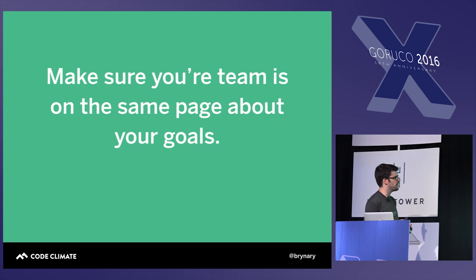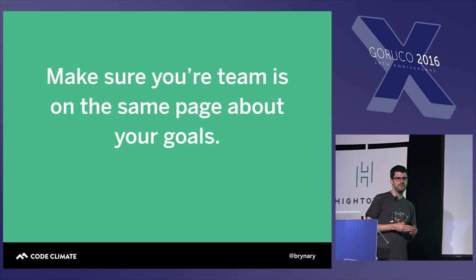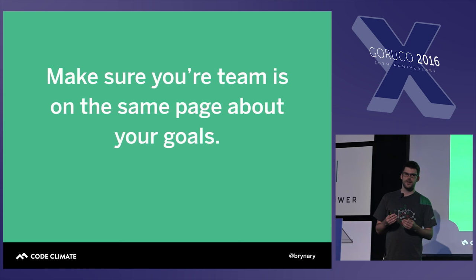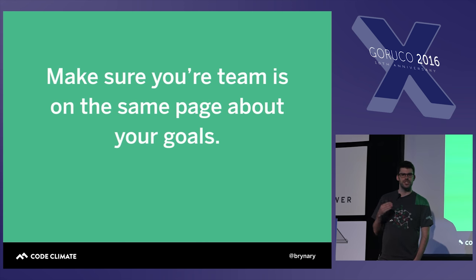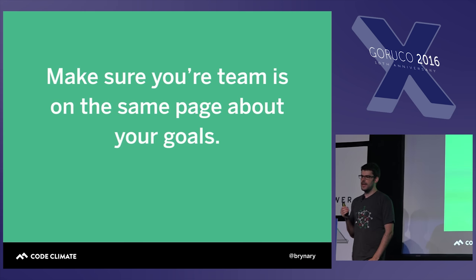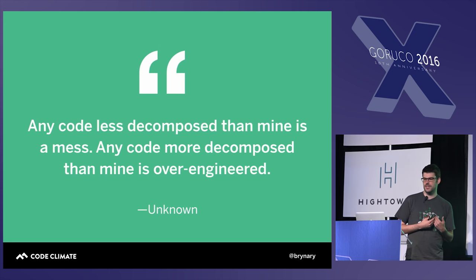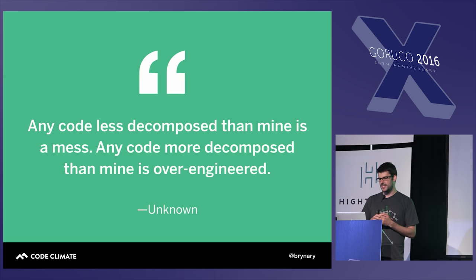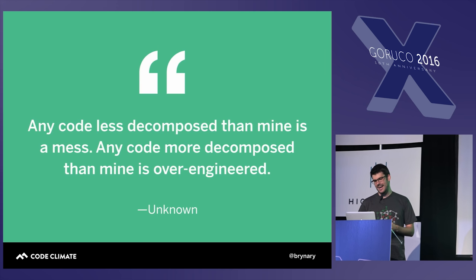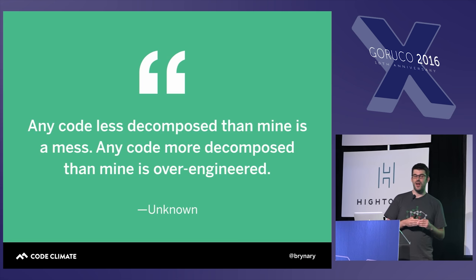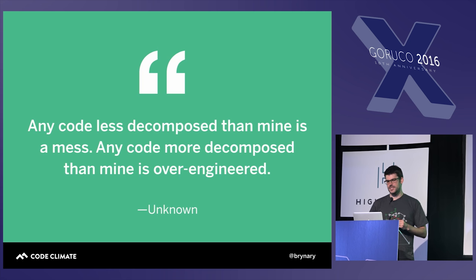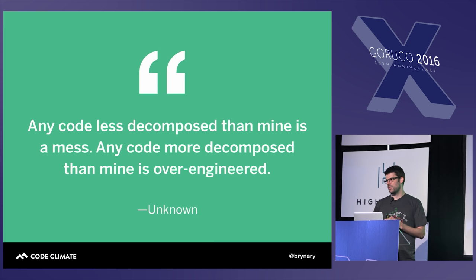The takeaway here is to make sure your team is on the same page about your goals. If you want to improve code quality and different individuals on your team have different understandings of what code quality is or how to achieve it, you are at risk of spending a lot of time, energy, and potentially frustration moving in different directions. One quote that really sums this up relates to code design: 'Any code less decomposed than mine is a mess, and any code more decomposed than mine is over-engineered.' You've probably all felt this. So start with that conversation with your team.